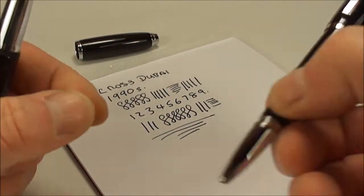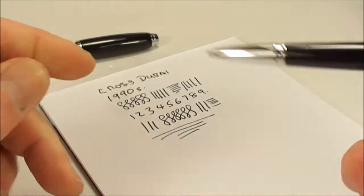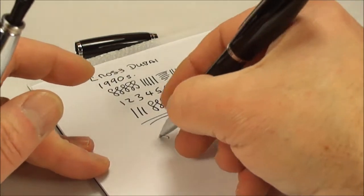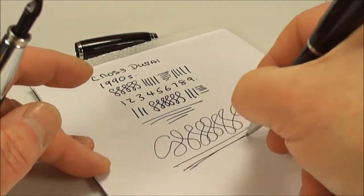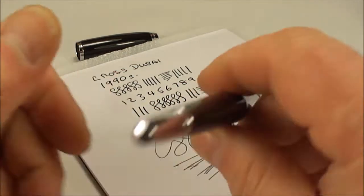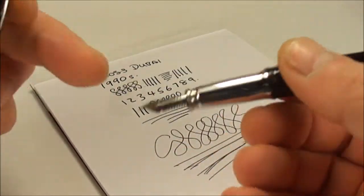Now the ballpoint is just a twist mechanism, and as we can see, that's also in full working order. It's got a cartridge inside, so that works fine. But the fountain pen, as I say...